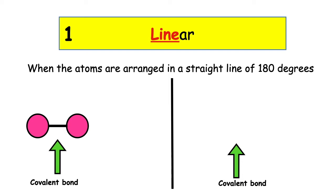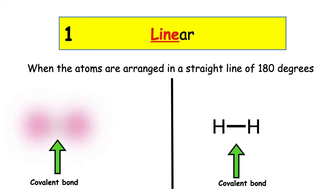We can see that the colour of the atom remains the same, representing the same type of element bonded to one another. We represent this pictorially as H–H. This is the way we would represent the shape of a hydrogen molecule, showing that the bond is linear.